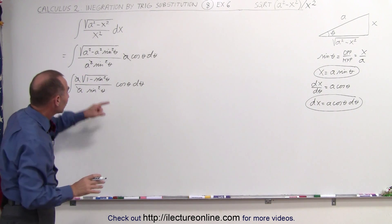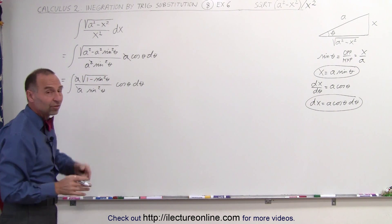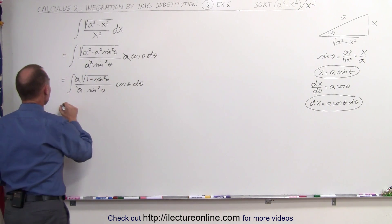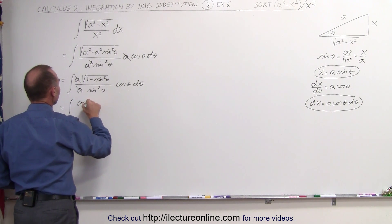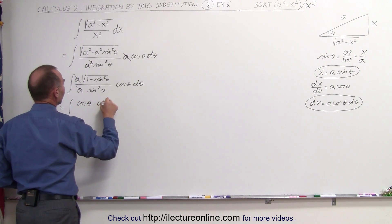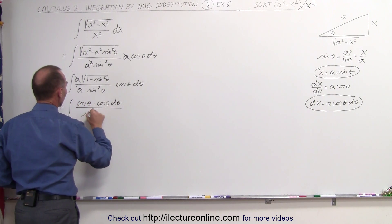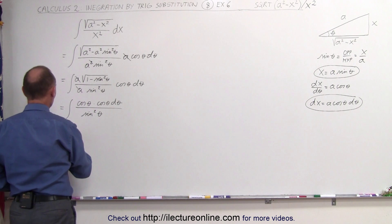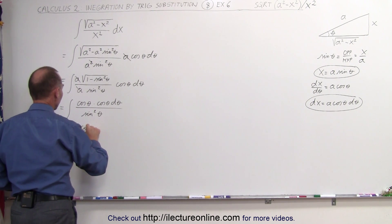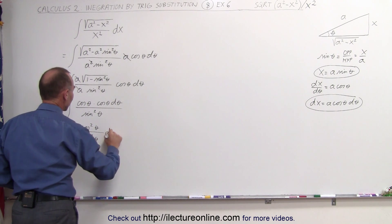Of course, 1 minus the sine squared of theta is the cosine squared of theta, and when we take the square root of that, we simply get the cosine of theta. This becomes equal to the integral of the cosine of theta times the cosine of theta, d theta, divided by the sine squared of theta. Multiplying this together, this becomes equal to the integral of the cosine squared of theta divided by the sine squared of theta, times d theta.